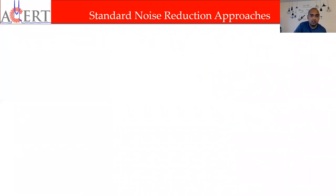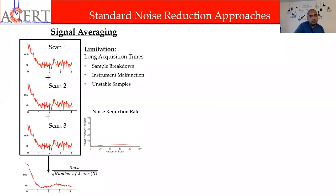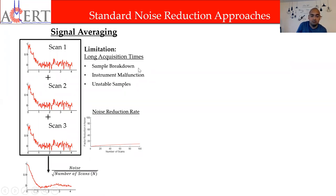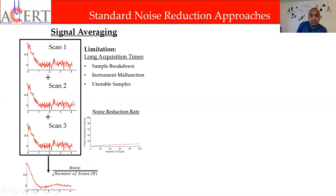What are the traditional approaches to removing noise in ESR? One is signal averaging — you repeat the experiment multiple times and average them to get a better signal. But signal averaging is pretty slow. To get an improvement by a factor of 10, you have to repeat the experiment 100 times — that's by the square root of N. Limitations include sample breakdown, instrument wear, and unstable samples that can't stay there for so long.